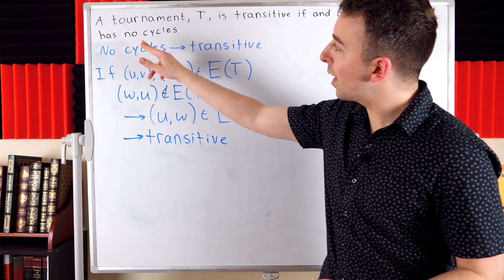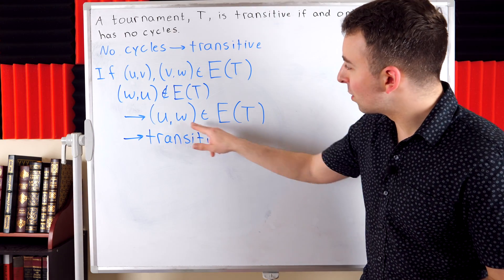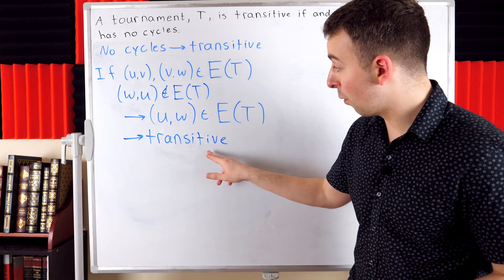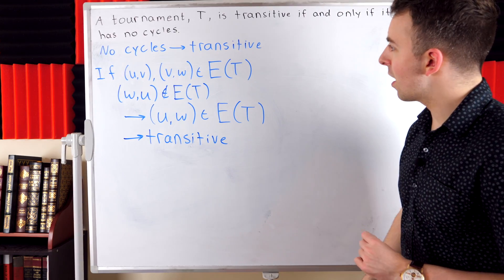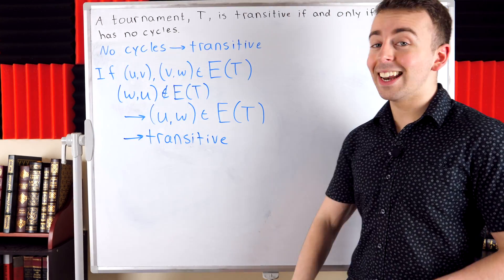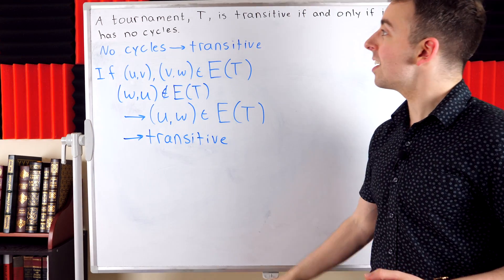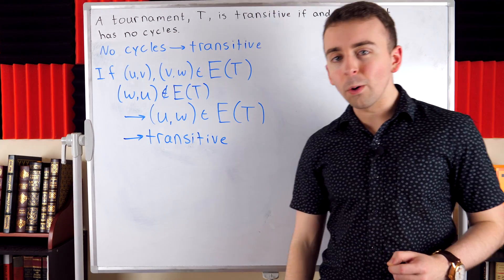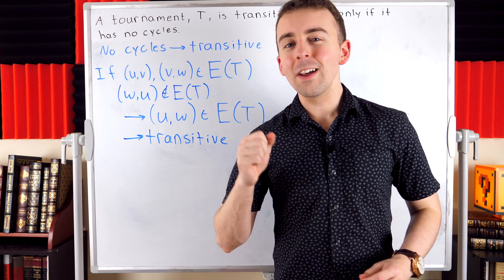So anytime UV and VW are arcs of our tournament, for three vertices U, V, and W, we must have that UW is an arc of the tournament, and thus the tournament is transitive. If a tournament has no cycles, then the only arc allowed between U and W is the one that forces transitivity. In conclusion, a tournament is transitive if and only if it has no cycles.